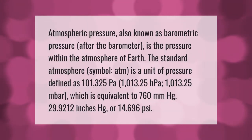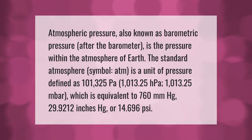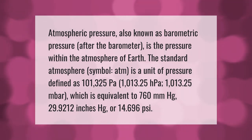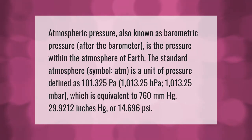Atmospheric pressure, also known as barometric pressure after the barometer, is the pressure within the atmosphere of Earth. The standard atmosphere (symbol: atm) is a unit of pressure defined as 101,325 pascals, 1013.25 hectopascals, or 1013.25 millibars — equivalent to 760 millimeters Hg, 29.9212 inches Hg, or 14.696 psi.